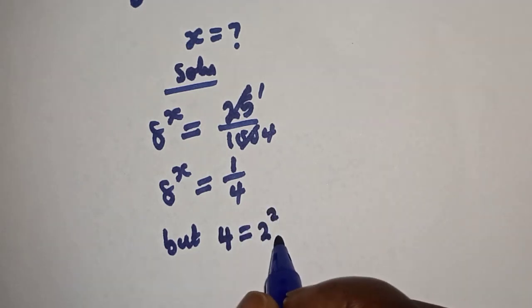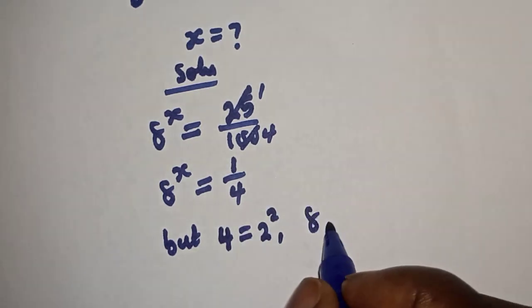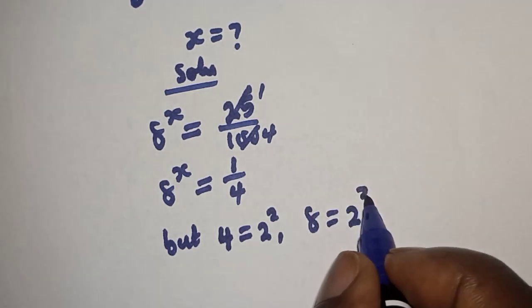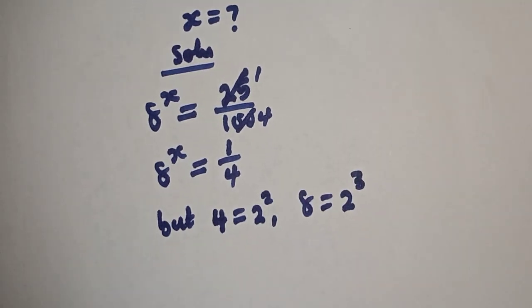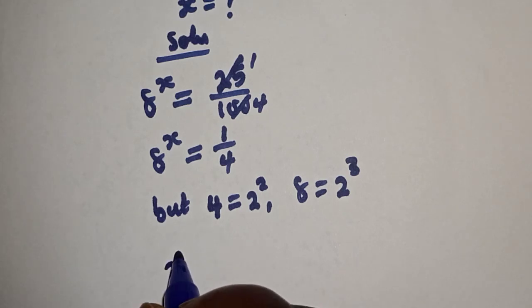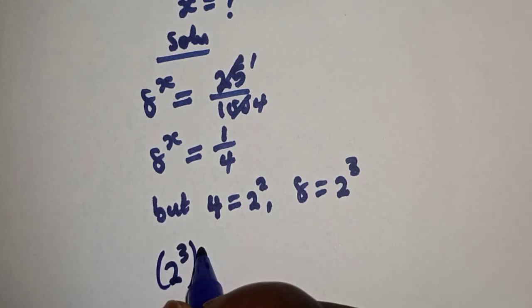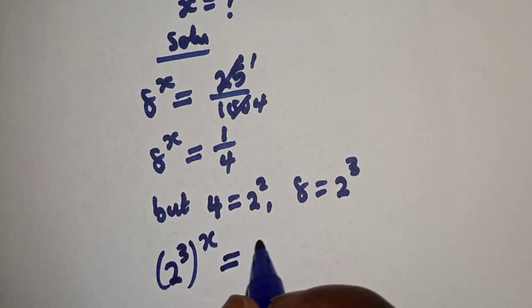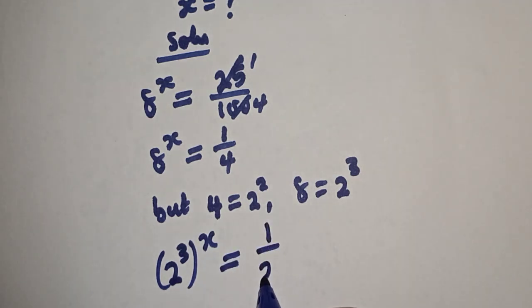And 8 is equal to 2 raised to power 3. And we have 2 raised to power 3 to the power of x is equal to 1 over 2 squared.